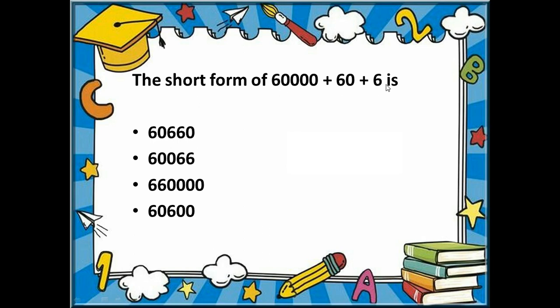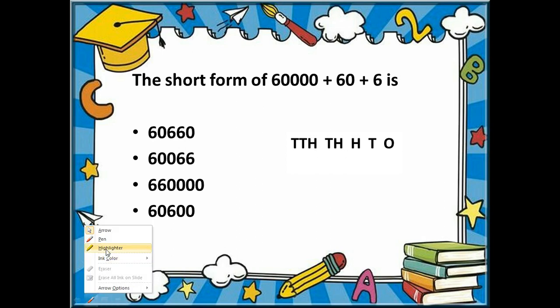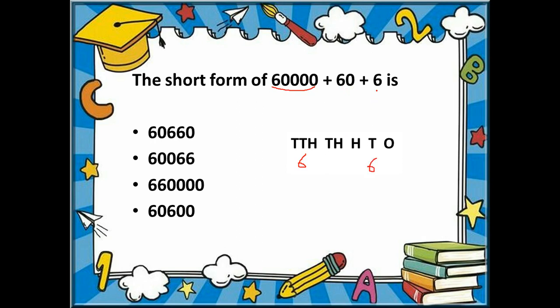The next question asks us to write the short form of sixty thousand plus sixty plus six. Writing out the place values — ones, tens, hundreds, thousands, ten thousands — sixty thousand places 6 in the ten-thousands place. Then sixty places 6 in the tens place, and the last six goes in the ones place. The remaining places get zeros. So the correct answer is sixty thousand sixty-six (60,066).